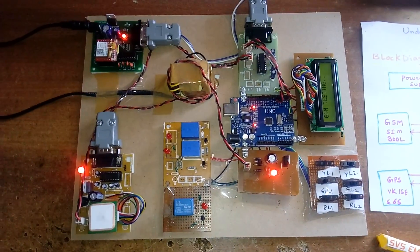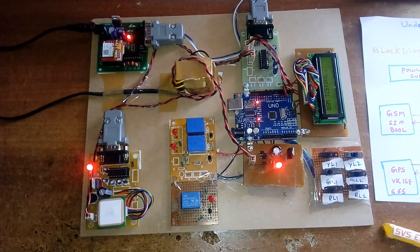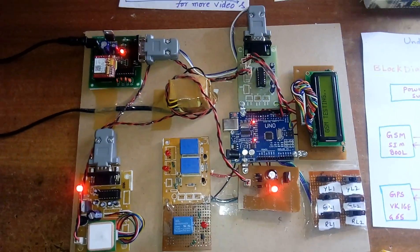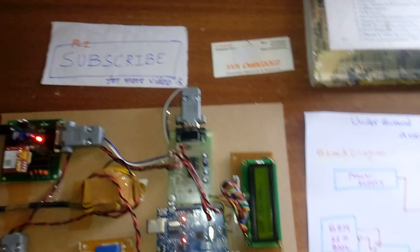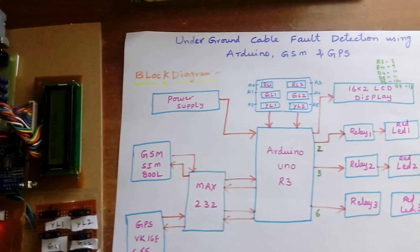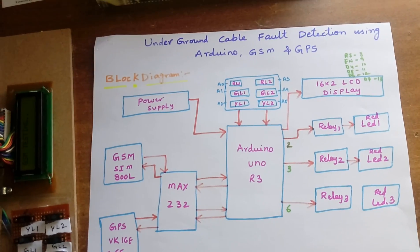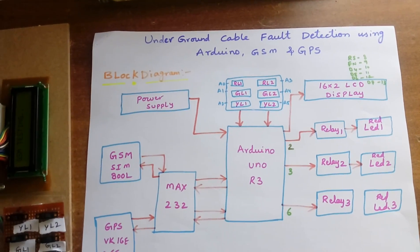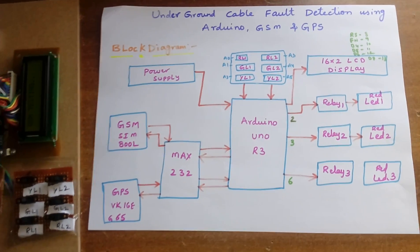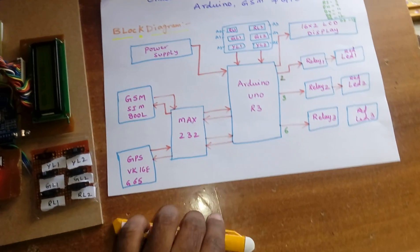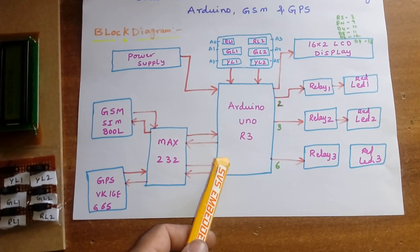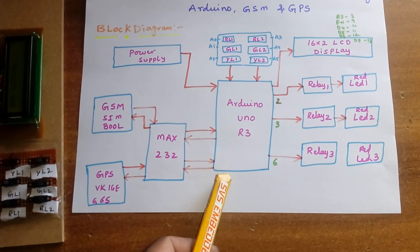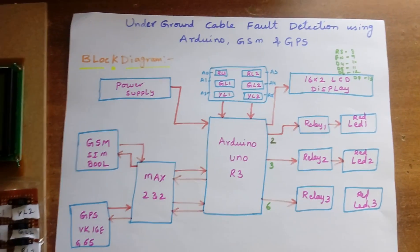Hi, we are from SVS Embedded. The project title is Underground Cable Fault Detection using Arduino, GSM, and GPS. In this project I am using an Arduino Uno R3 development board and a 16x2 LCD display.